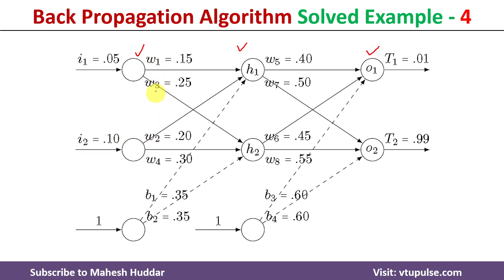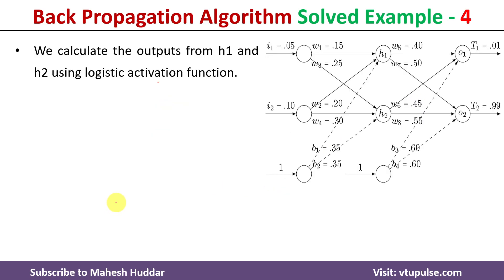The input values are 0.05 and 0.10. Weights w1, w2, w3, w4 are associated with the hidden layer neurons; w5, w6, w7, and w8 are associated with the output layer neurons. b1 and b2 are the biases for the hidden layer neurons; b3 and b4 are the biases for the output layer neurons. We need to propagate the input from the input layer to the output layer, calculate the error, and then update the weights.